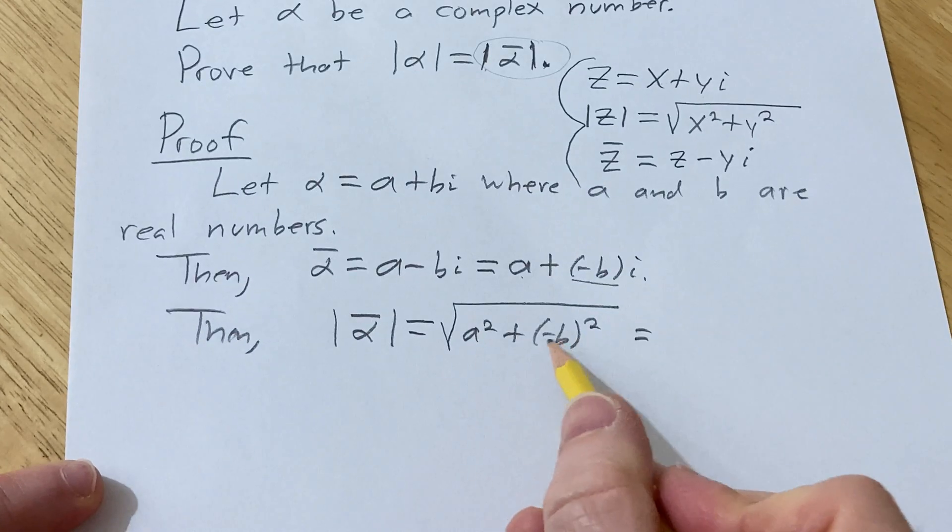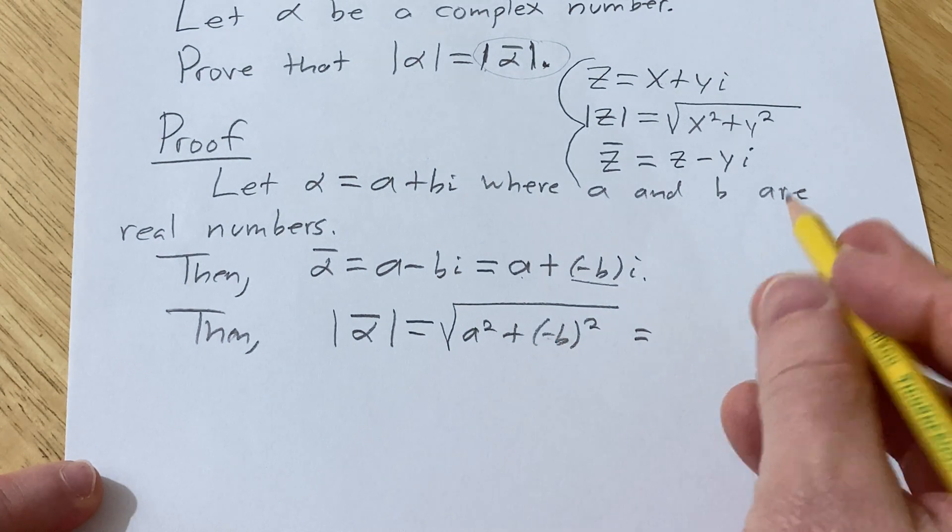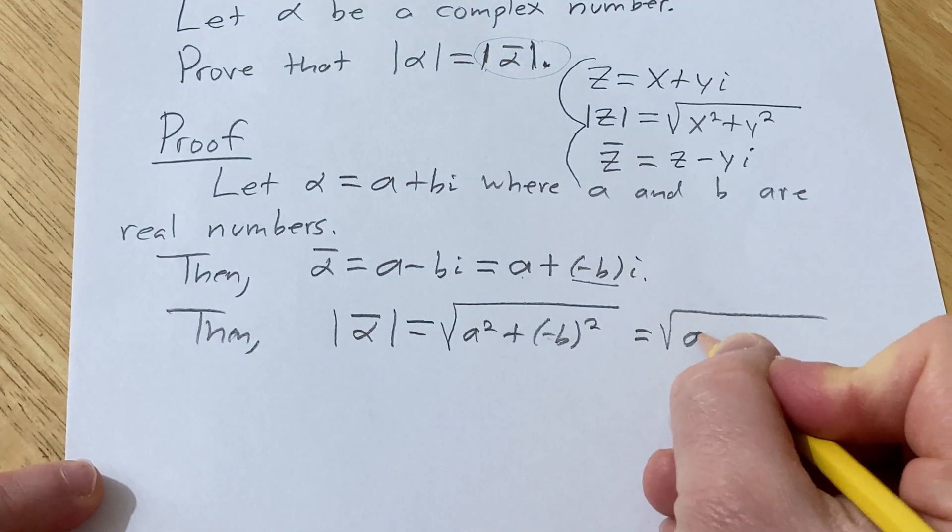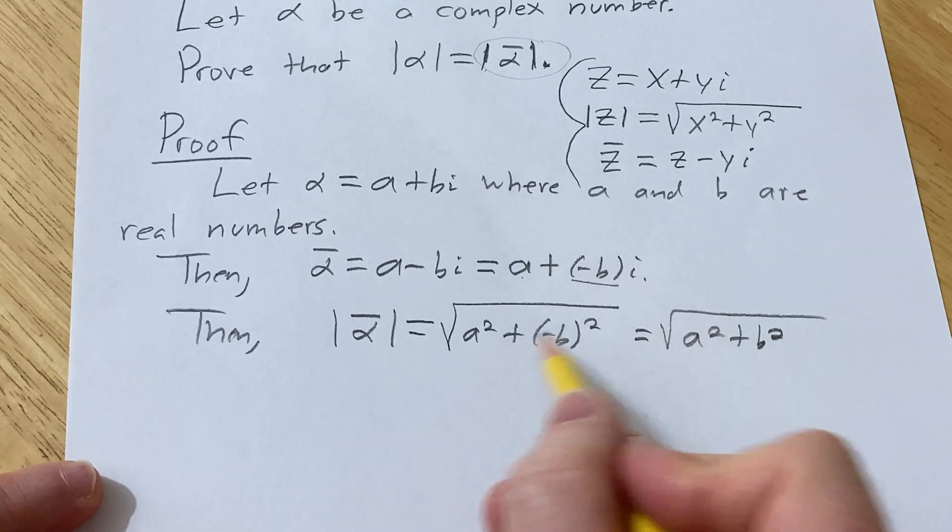Here's the key: when you square negative b, the negative is going to go away. There's not going to be a negative one there. This becomes a squared plus b squared. If you don't understand this step,